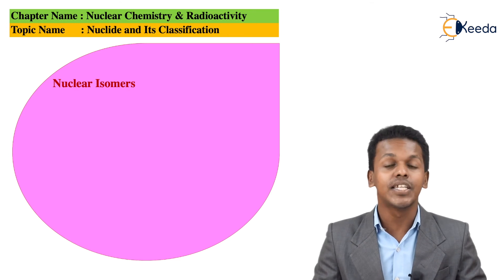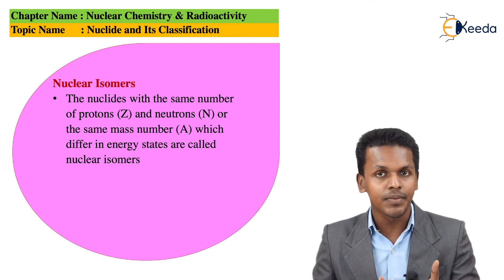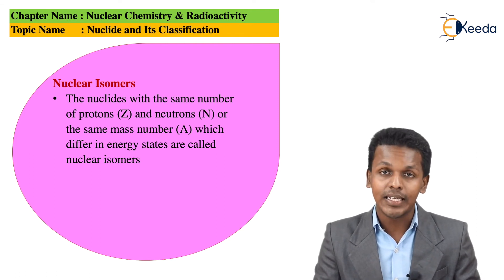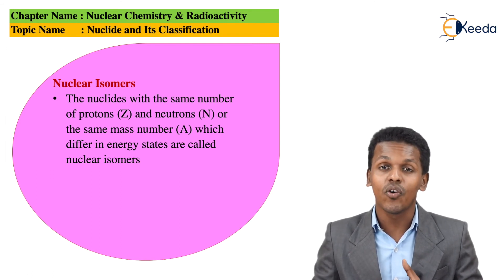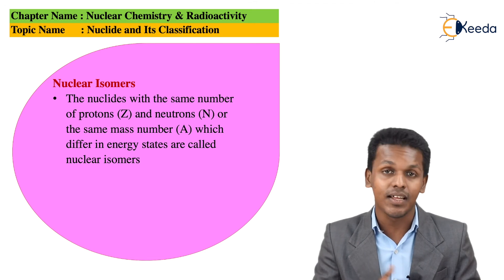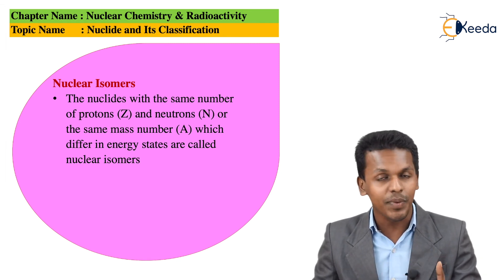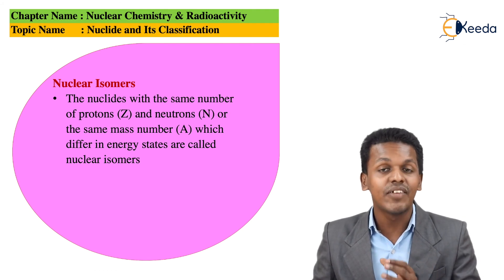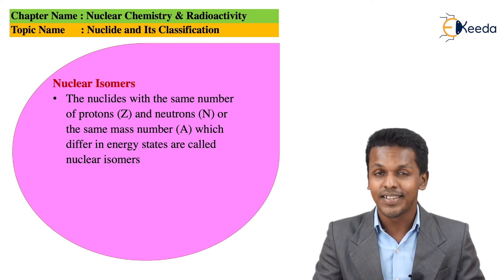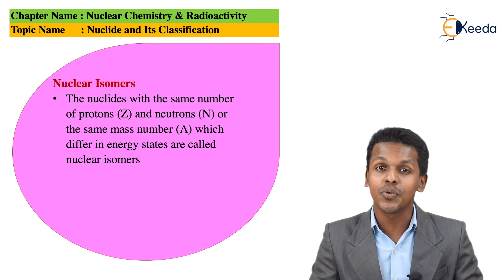The last classification is nuclear isomers. Certain elements have the same atomic number and same atomic mass number but differ in energy. For example, cobalt-60 and cobalt-60M — where M stands for meta — has tremendous energy that can be utilized. Both elements have the same atomic number, atomic mass number, and number of neutrons, but they differ in energy; that is why they are known as nuclear isomers of each other. These were all the classifications related to nuclides. Thank you friends for watching this video; I hope you understood it clearly and I will see you next time.